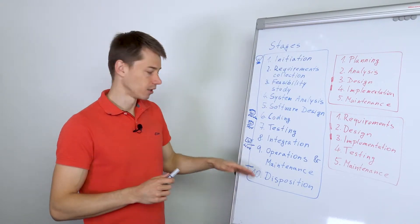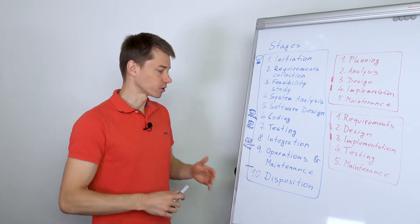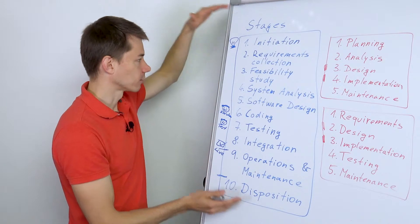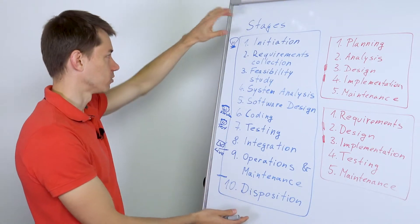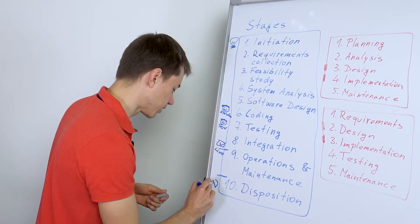And at some point, a project that eventually was a great idea, three, five, ten years later, will be, sooner or later, it will be disposed. So the software development life cycle talks about all these stages, from the idea to disposing it to a trash.